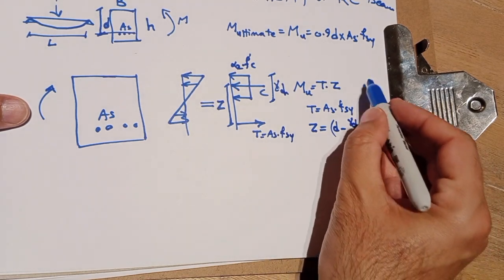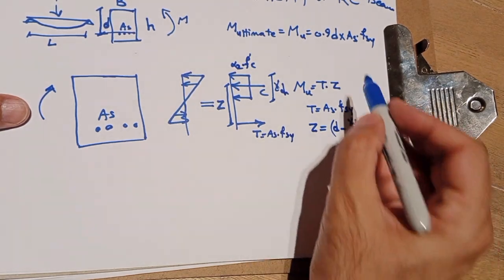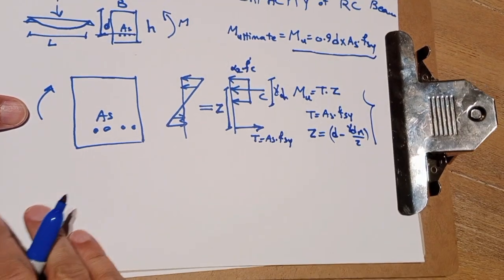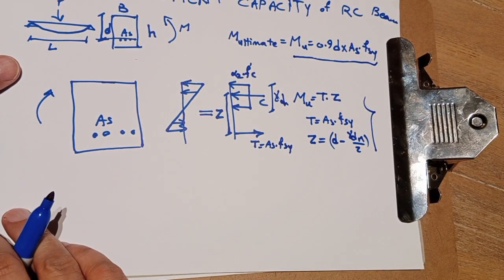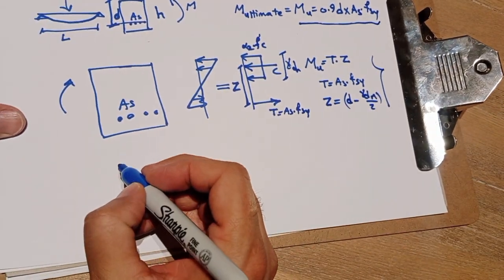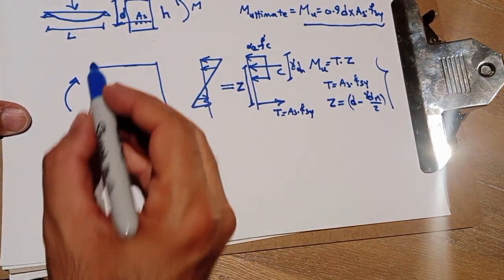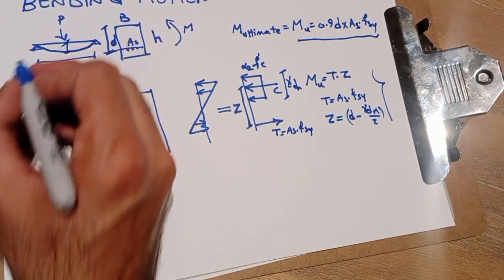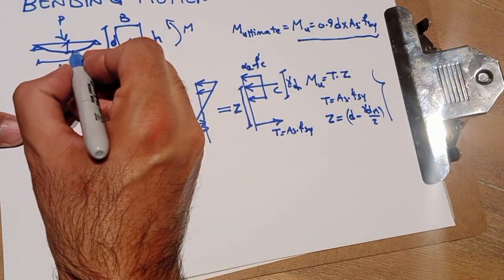So instead of all these things, we can use just simply this equation to have very good estimation of ultimate bending capacity. So what we're going to compare with the applied bending moment, let's say for this one that applies maximum bending here.